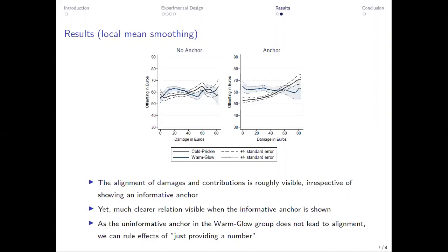But what's interesting is that there's also in the anchoring group no positive association between damages and offsetting for the warm glow group. So it's not just because they saw the number, the alignment effect, but it's really because of the information content of this anchor.